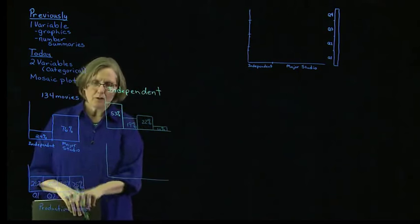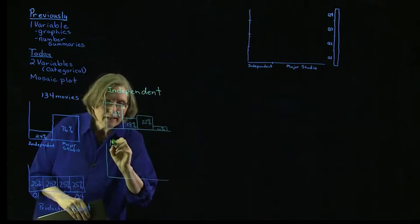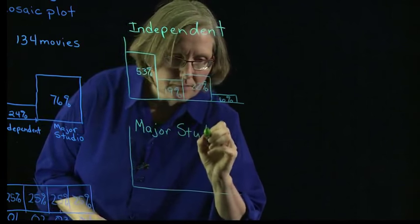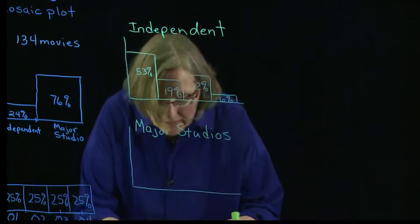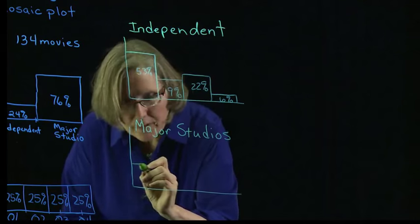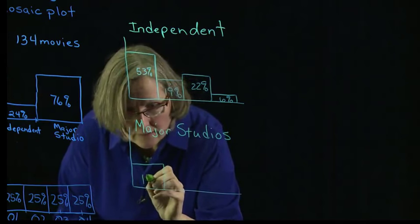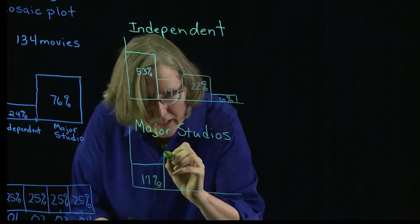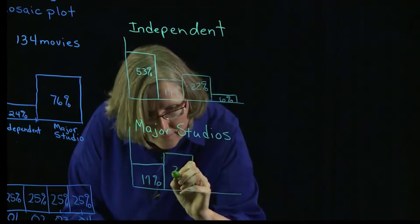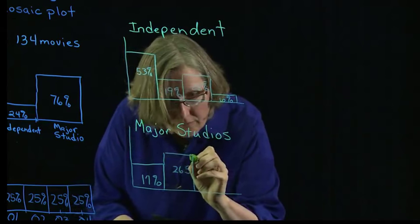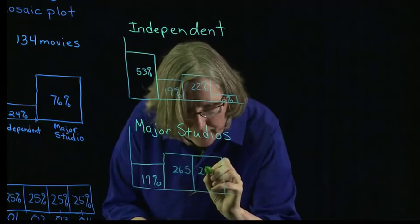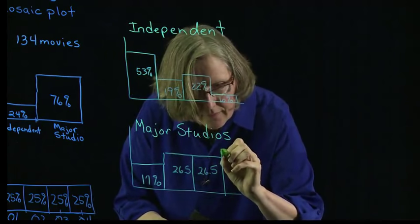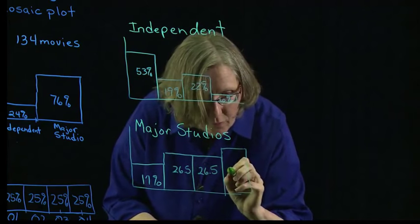Now if I look at the distribution of production budget for the major studios, I see that 17% fell in the first quartile, 26.5% fell in the second quartile, 26.5% fell in the third quartile, and 30% fell in the fourth quartile.